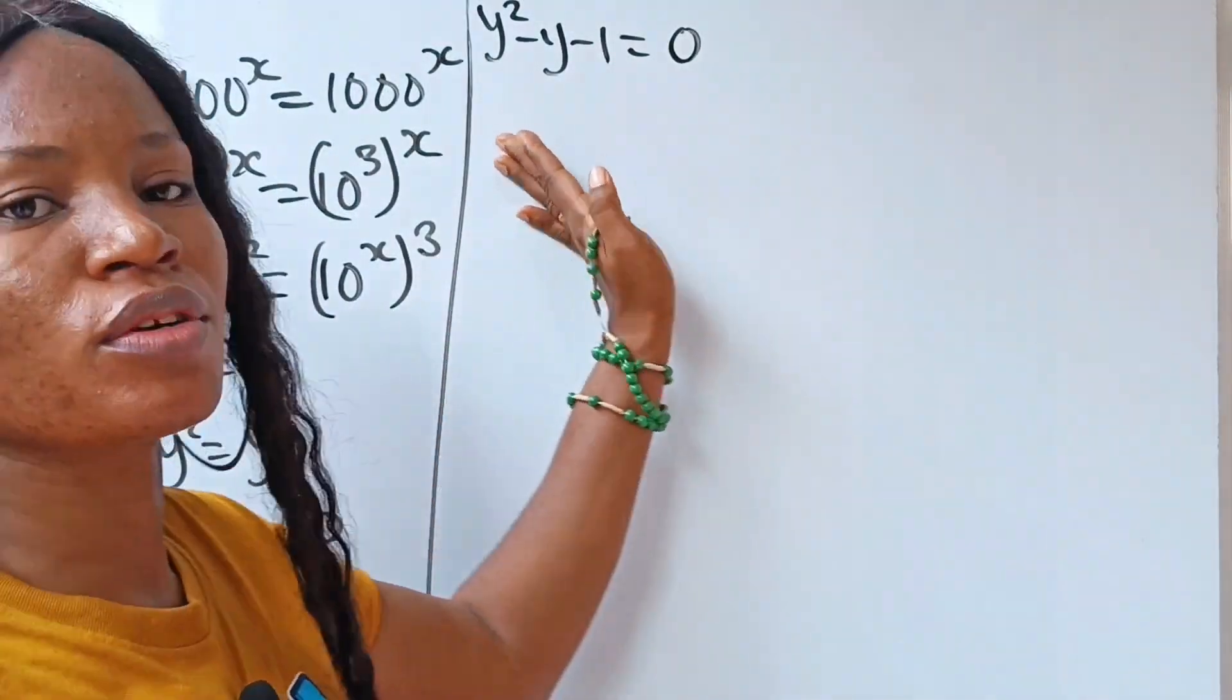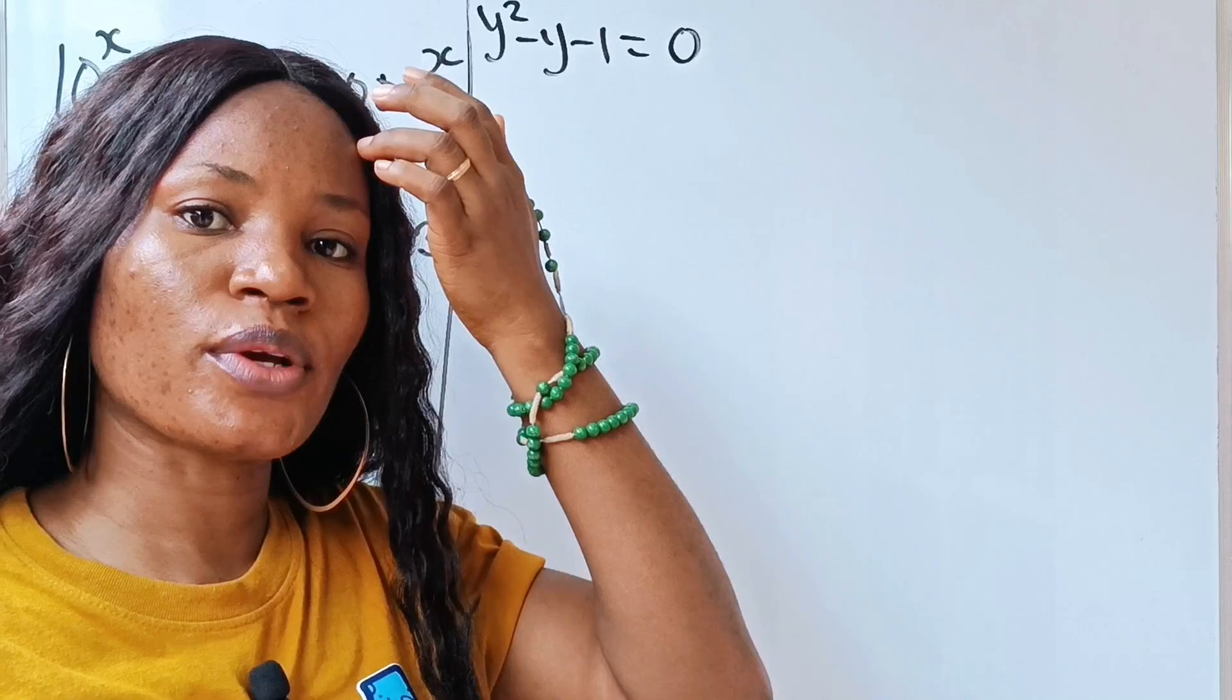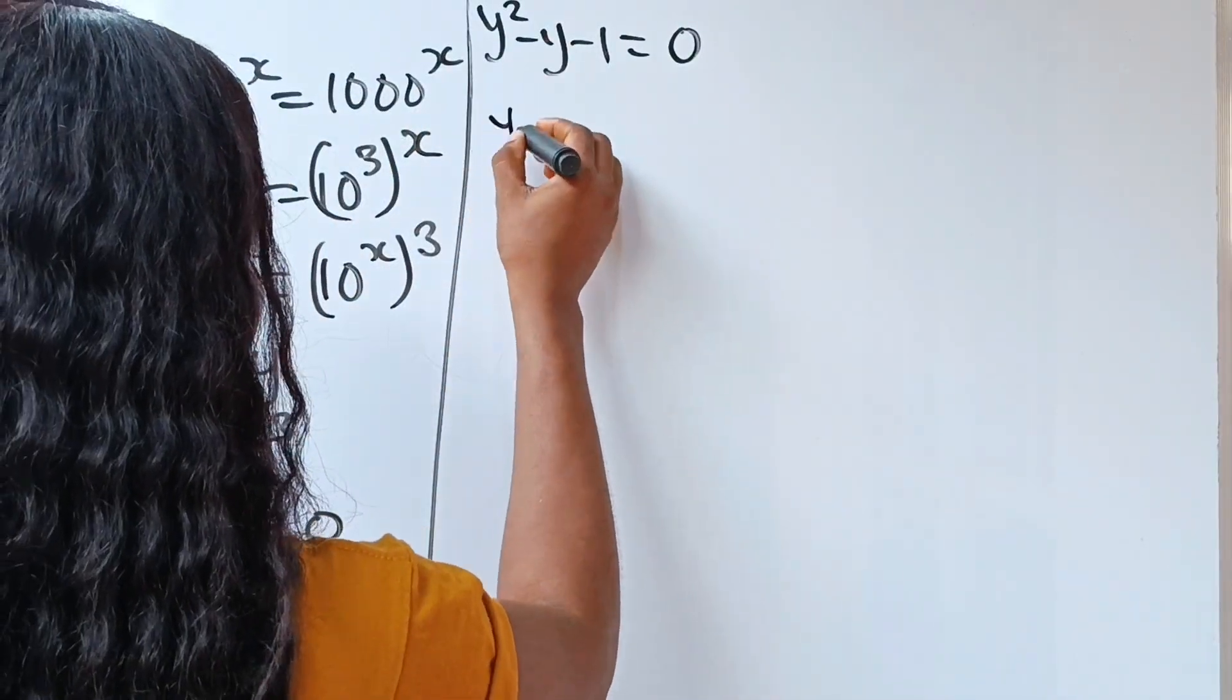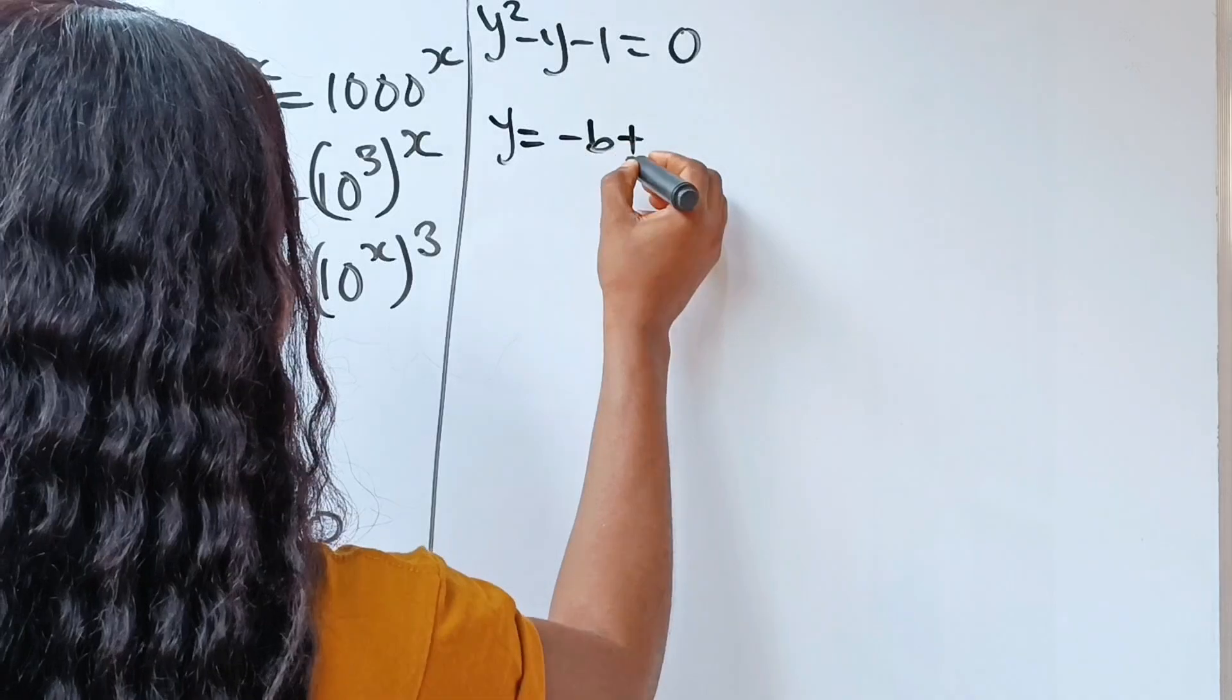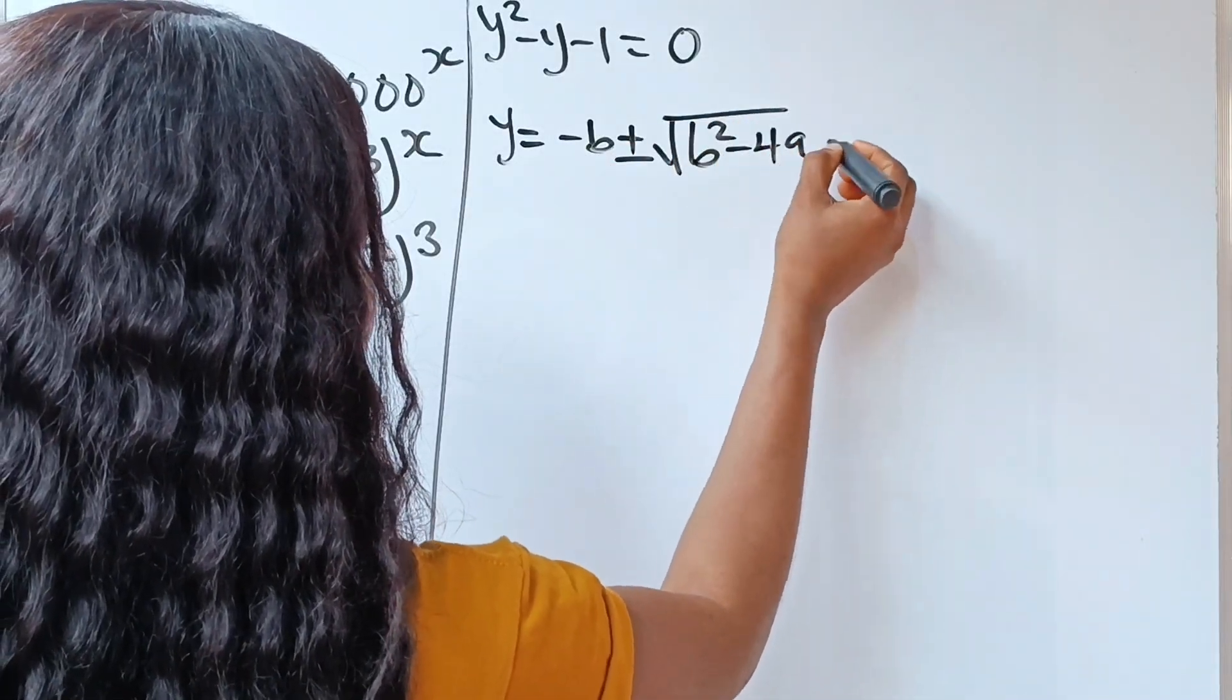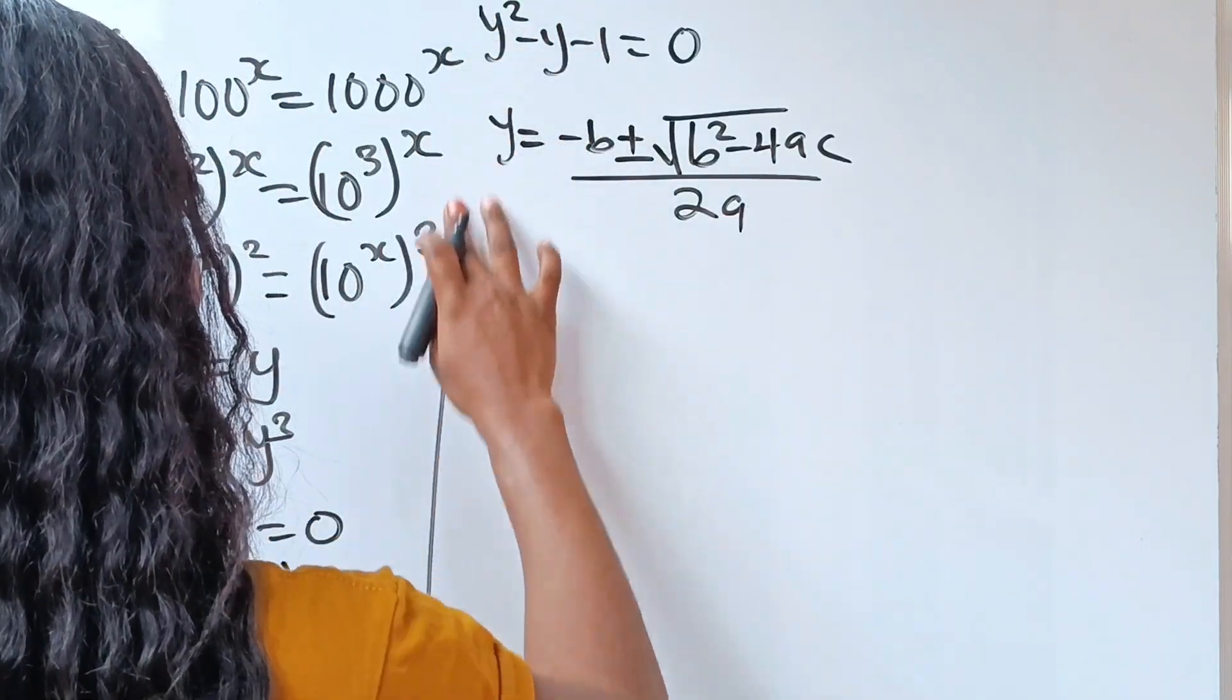Now so we have a quadratic equation here. So let's solve this using quadratic equation formula. And the quadratic equation formula states that y is equal to minus b plus or minus square root of b squared minus 4ac all over 2a.